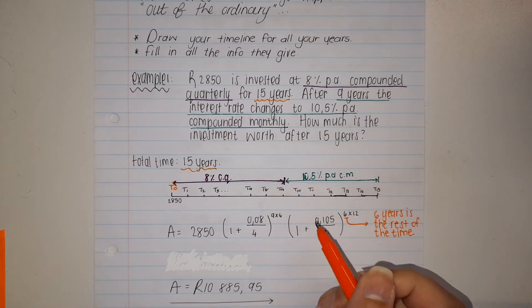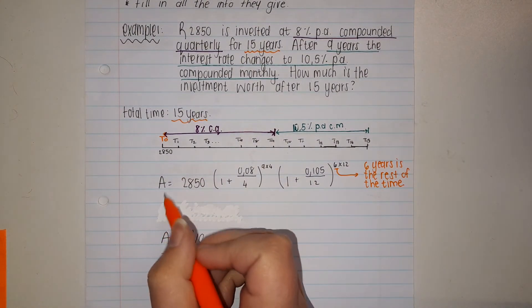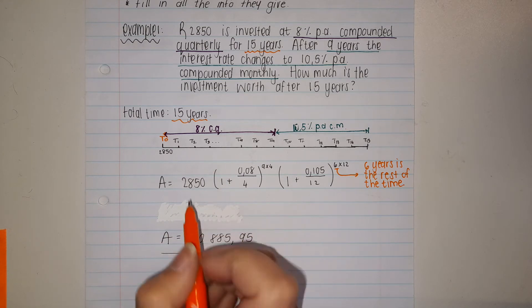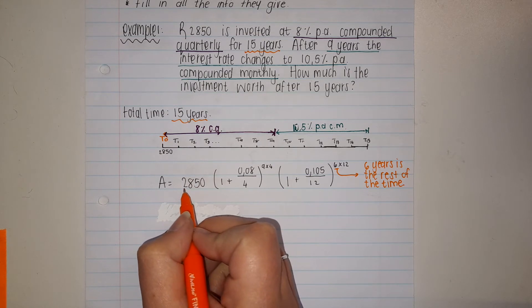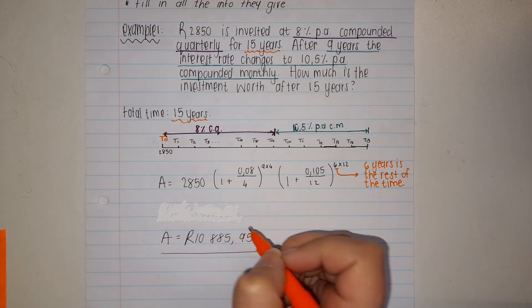How am I going to put that into my equation? I'm going to say it's my compound interest: my initial value, which is 2850 that I started with. Now comes the change.